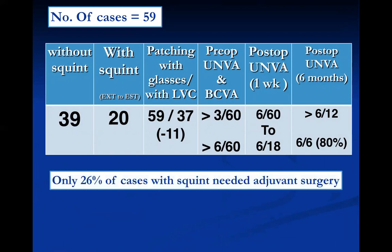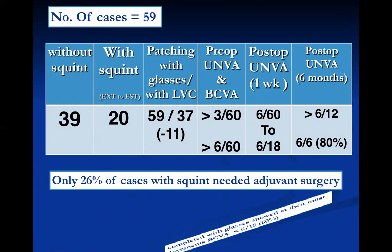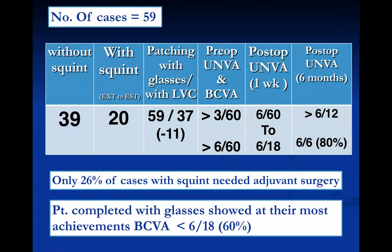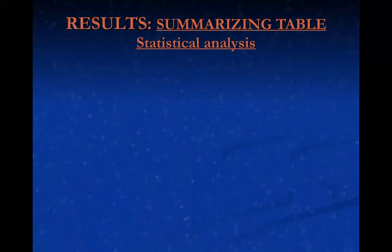Only 26 cases required adjuvant squint surgery after six months of follow-up to complete correction of the angle of deviation. The patients who completed treatment with glasses showed best corrected visual acuity of less than 6/12, around 6% of their original vision before — showing good but still limited results, much less than those who underwent laser vision correction.